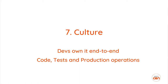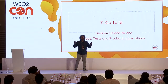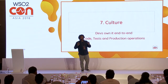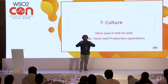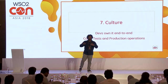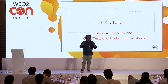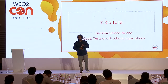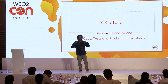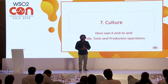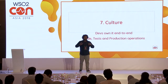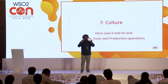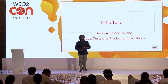Number seven: culture. In my opinion, this is the most important of all seven steps. When adopting an agile development process, culture plays a huge role — there's a mind shift that needs to happen in every developer's mind. With agile and pipelines in place, developers do not own just the code; they have to own the entire pipeline end to end, being responsible for coding, writing tests, and running production operations. You have to make sure you deliver the right message to help developers make this shift in mindset.